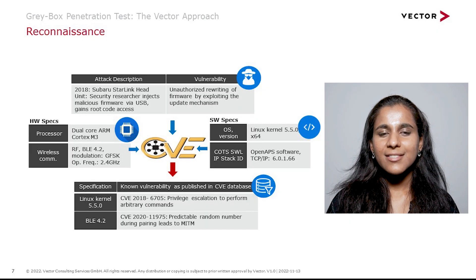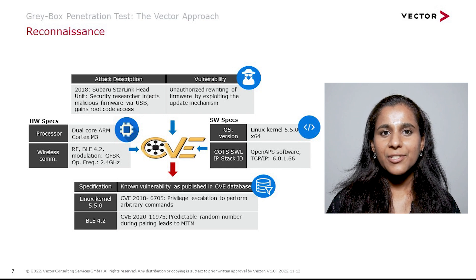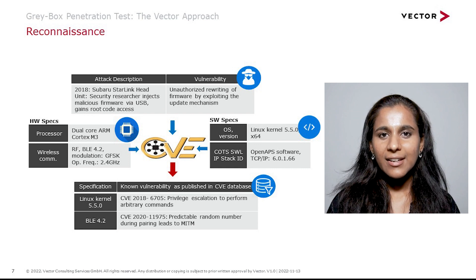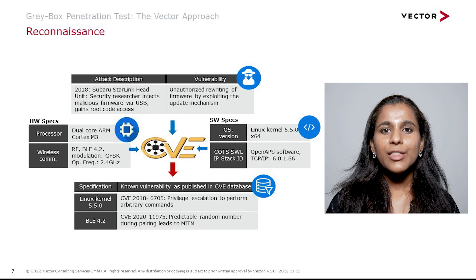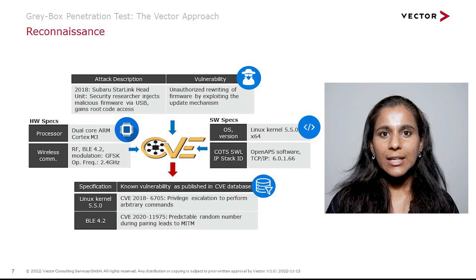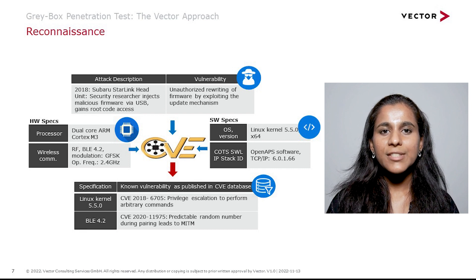What are the different sources that you refer to in order to find out more about your system under test? We have active and passive reconnaissance. In active, we get information through direct interaction with the target — for instance, port scanning, or hardware like a microcontroller and exploring it. In passive, we get information without an interaction with the target. Here we can use the CVE database, online brochures, device-specific documents like hardware and software specifications, and target attack histories.